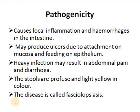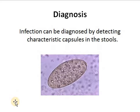Now we will discuss pathogenicity. The organism is attached to the intestine of humans or pigs. It may cause local inflammation and hemorrhages in the intestine, and may produce ulcers due to attachment on the mucosa and feeding on the epithelium. Heavy infection of Fasciolopsis buski may cause abdominal pain and diarrhea. The stools are profuse and light yellow in color.